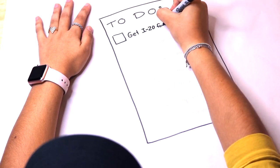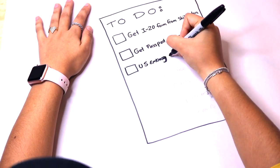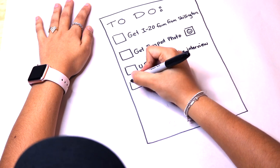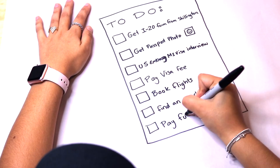Get my I-20 form from Shillington, take a new passport photo, go to the US Embassy in Sydney for the M1 visa interview, pay that visa fee, book flights, find an apartment and pay the full tuition fee.